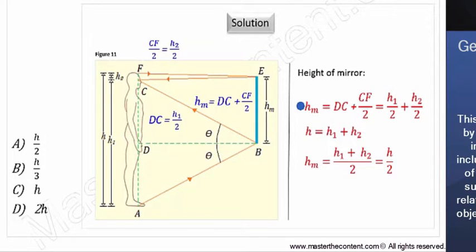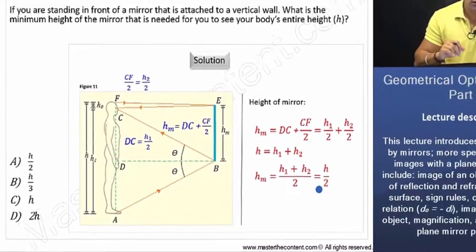Now, recall the total height is equal to H subscript 1, which is the height from floor to eye level, plus H subscript 2, which is the height from eye level to the top of your head. Now, if we go ahead and plug in height into our equation, we find that the minimum height of the mirror that is required for you to see your entire body is simply one half your body's entire height. Okay, I hope that was helpful.